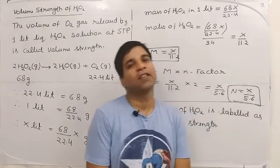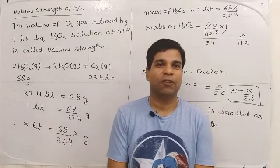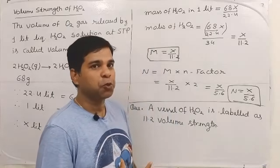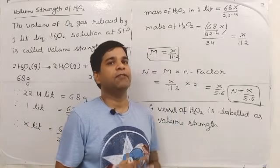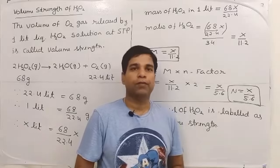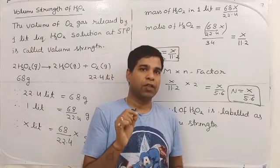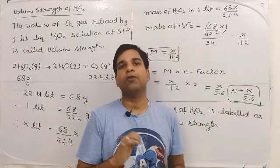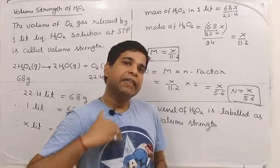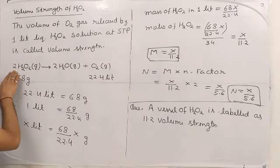Good afternoon. Welcome to this session on the volume strength of H2O2. Volume strength is defined for a container in which H2O2 liquid is stored. H2O2 is not a very stable liquid — it has a peroxide linkage. Due to this peroxide linkage it becomes unstable and readily dissociates into H2O and O2 according to the equation: